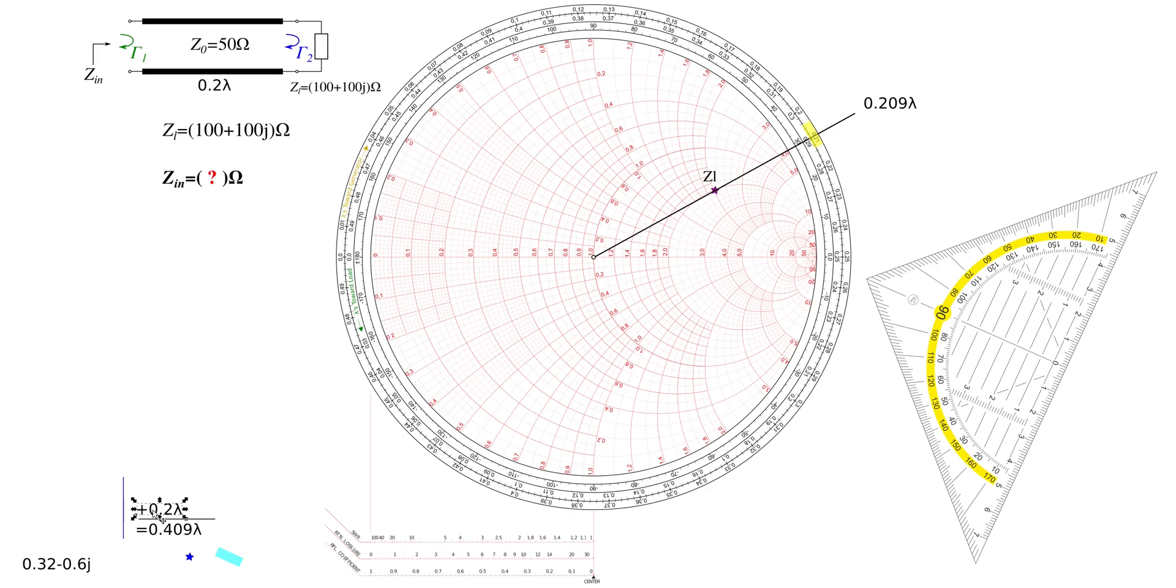Now we have to add 0.2 lambda to it, which is the length of my line, in order to get our final value, which is 0.409 lambda. So we start at 0.209, add our 0.2 lambda, and end at the new angle of 0.409 lambda.